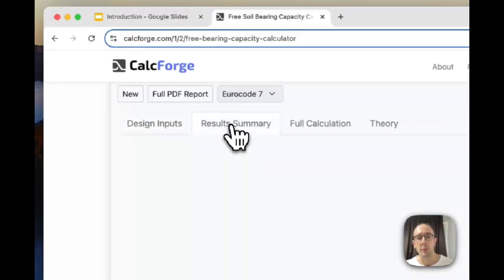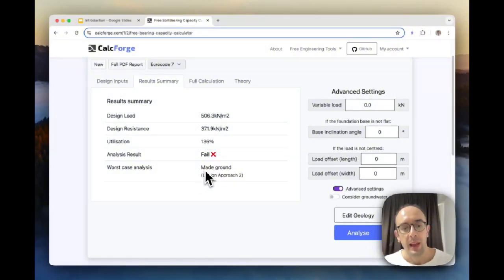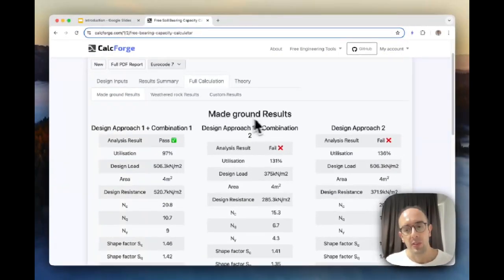I can then basically go through a breakdown of what the results are really showing me. So I can see here a sort of summary and it will also tell me what the worst case analysis is, which layer is it that's causing this to fail or which one's causing it to fail the most. If I click full calculation here, I'll actually see a breakdown for each one of the layers of geology.